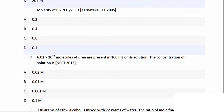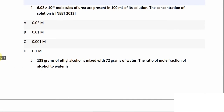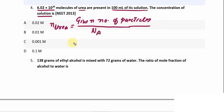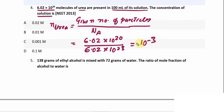Question four: 6.02 × 10²⁰ molecules of urea are present in 100 ml of solution; find the concentration. Number of moles of urea = given particles / Avogadro's number = 6.02 × 10²⁰ / 6.02 × 10²³ = 10⁻³ mol.